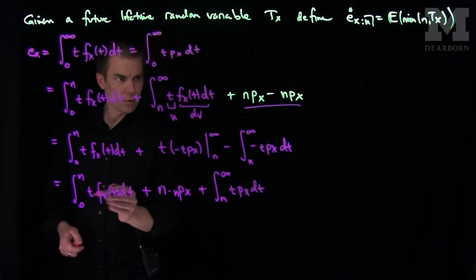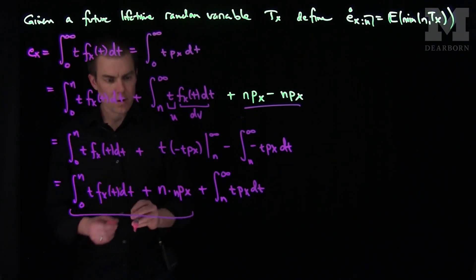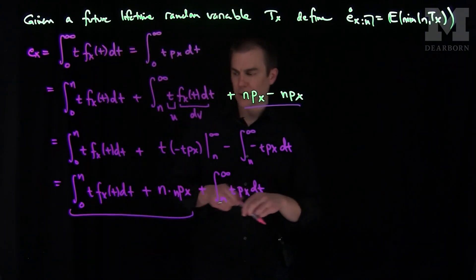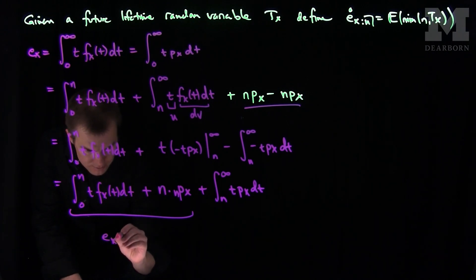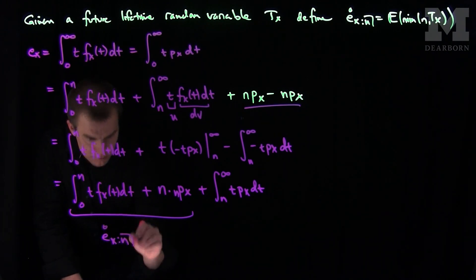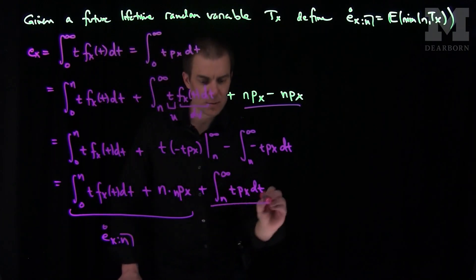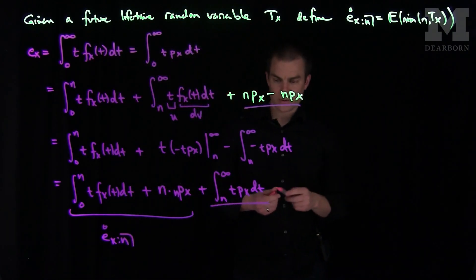Now this term over here can be grouped. And what this is, is that first bracketed term is exactly e(x,n,circle).